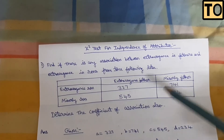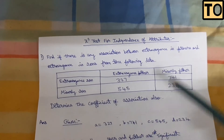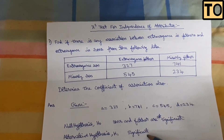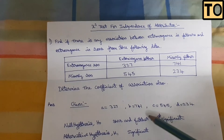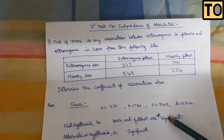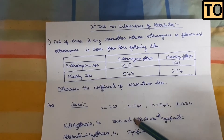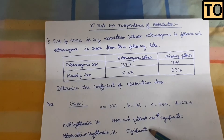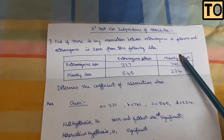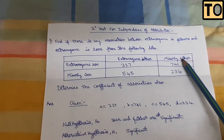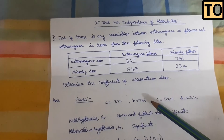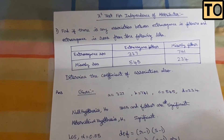The null hypothesis is that sons and fathers are not significantly associated. The alternative hypothesis is that they are significantly associated. We have a level of significance — the default is 5%, which is 0.05.